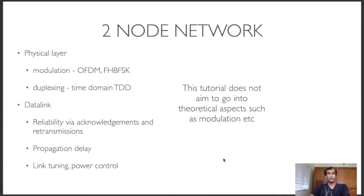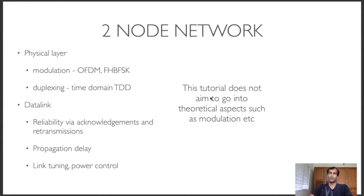Let's start with the two-node network. In a two-node network, we deal with the physical layer and the data link layer. We don't have multi-hop in this scenario, so we don't need to discuss higher-layer concepts such as routing and network transport, which will follow soon after. At the same time, we will not go into theoretical aspects such as modulation in this tutorial — our aim is to stick to practical demonstrations and setting up networks in reality. You can catch up on modulation concepts in other freely available material online.